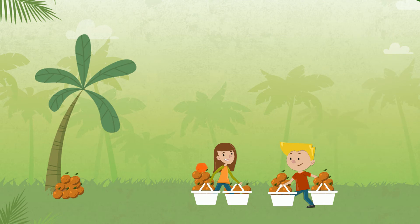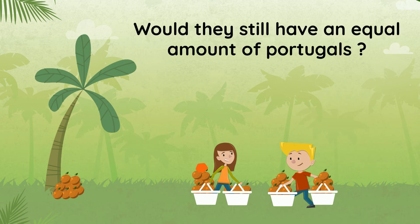But what if one of Jill's portugals turned out to be just an orange rock? Would they still have an equal amount of portugals? Well, to figure this out, we have to find the new sum of portugals that Jack and Jill has.